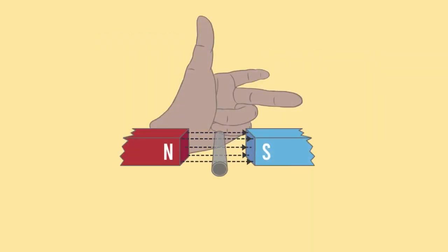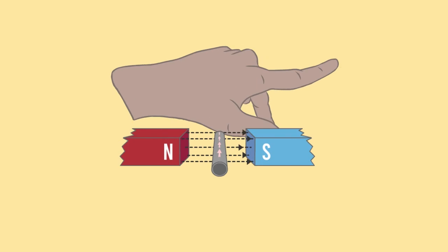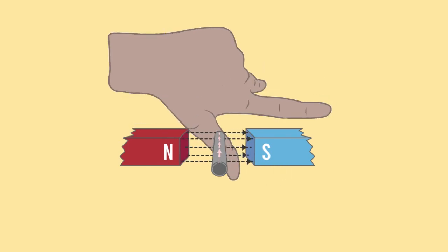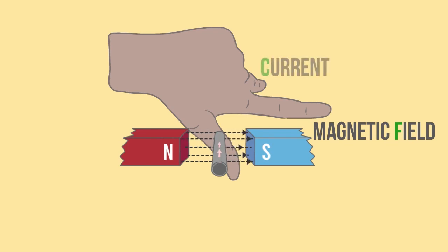Let us look at a scenario where the current has changed direction, so you need to rotate your hand around. Again, align your first finger to the magnetic field from north to south, your second finger in the direction of the current, and in this case the force is going downwards as per the direction of your thumb.